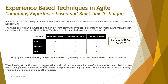We will look at an example of a safety critical system to understand how the risk balance can be achieved with a combined approach of automated test, exploratory test, and black box test. Below is a table describing this idea. The risk levels are listed vertically and the three test approaches are across the top. This table is an example of a mix of different testing techniques that can be used in a safety critical system, and it can also be adapted to other specific projects.